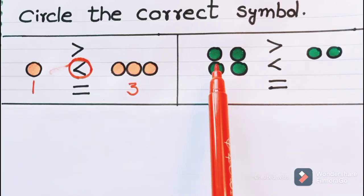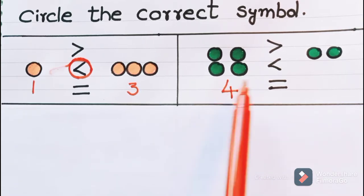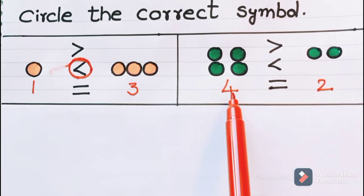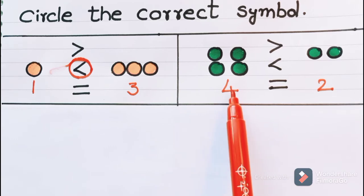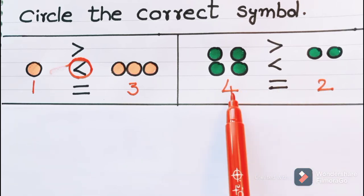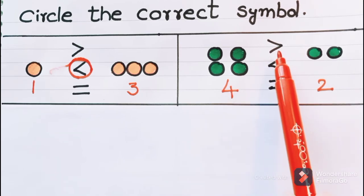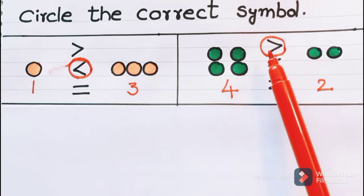Now see children, how many circles are here? One, two, three, four — there are four circles. Then how many circles are here? One, two. So we are comparing the number four with the number two. The number four is bigger than the number two. Four is the bigger number and two is the smaller number. So for bigger numbers, we have to use greater than symbol. Four is greater than two.